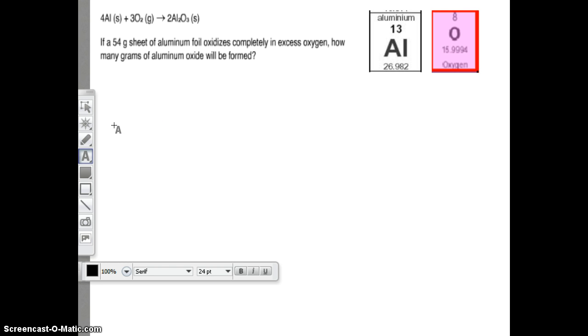If a 54 gram sheet of aluminum foil oxidizes completely in excess oxygen, how many grams of aluminum oxide will be formed? We start with 54 grams of aluminum, make it a fraction over 1. What has to be at the bottom of our next fraction? Grams of aluminum. Now let's look at what we're converting to. We want to go to aluminum oxide. Anytime we need to switch from one chemical to the next, what do we need to use? We need to use moles.